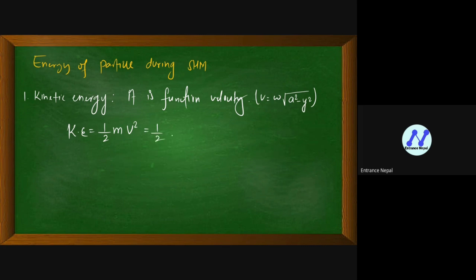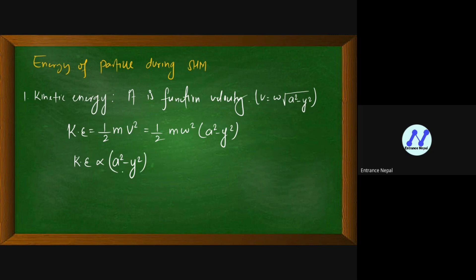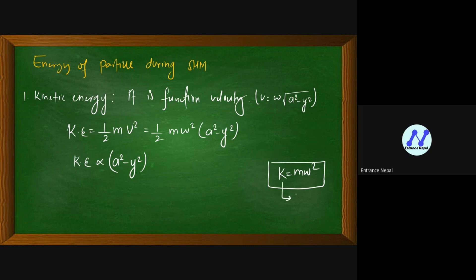Using the formula, mass times velocity squared gives omega squared times (A squared minus y squared). So kinetic energy is directly proportional to amplitude squared minus displacement squared. There is also the relation omega squared equals K over m, which is a useful constant substitution.